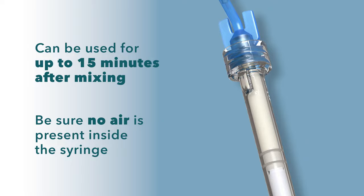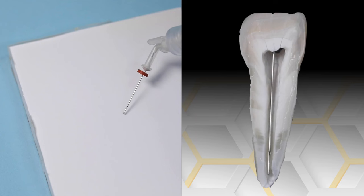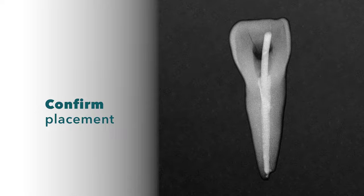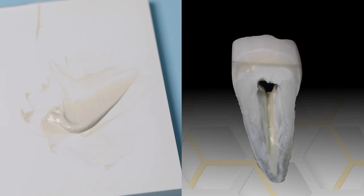Place the sealer with the required tip into the root canal. Gutta percha is inserted after the canal is filled. Confirm placement with a radiograph.